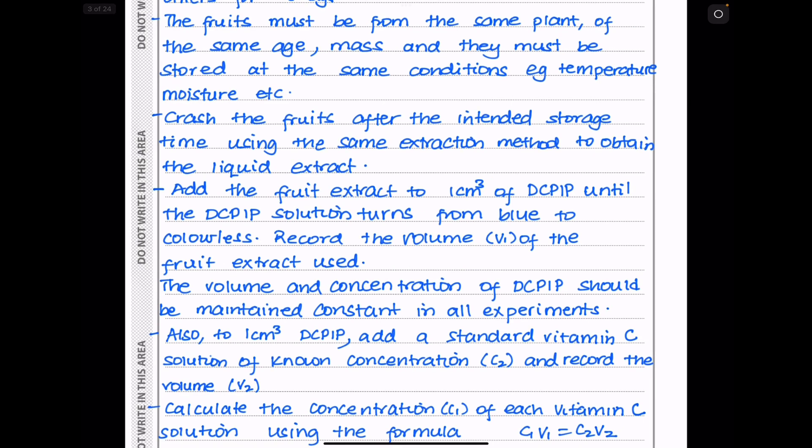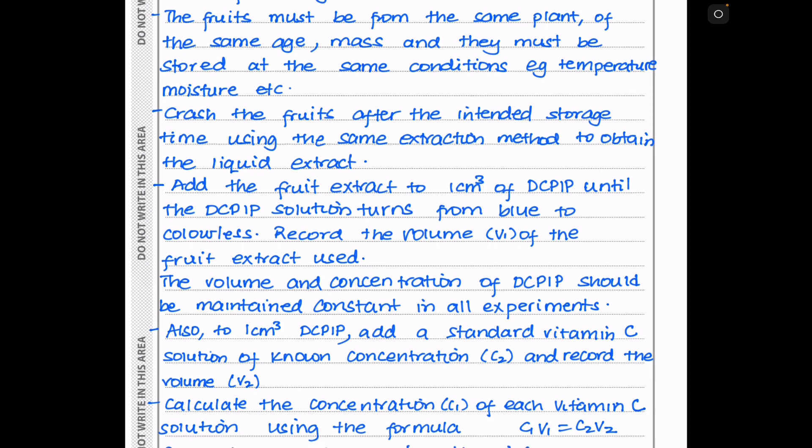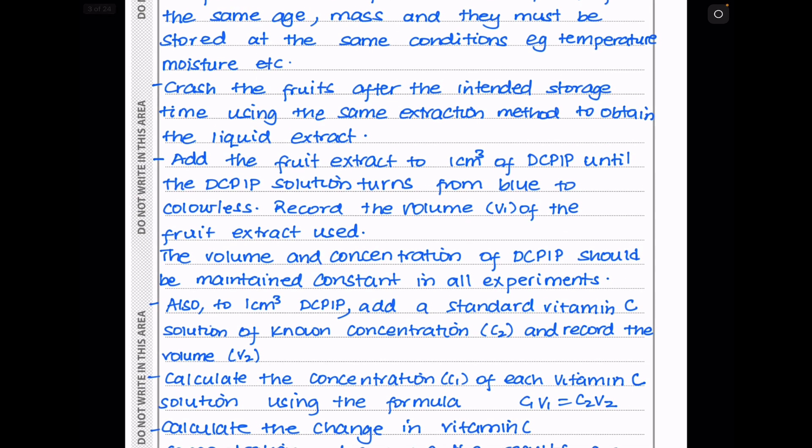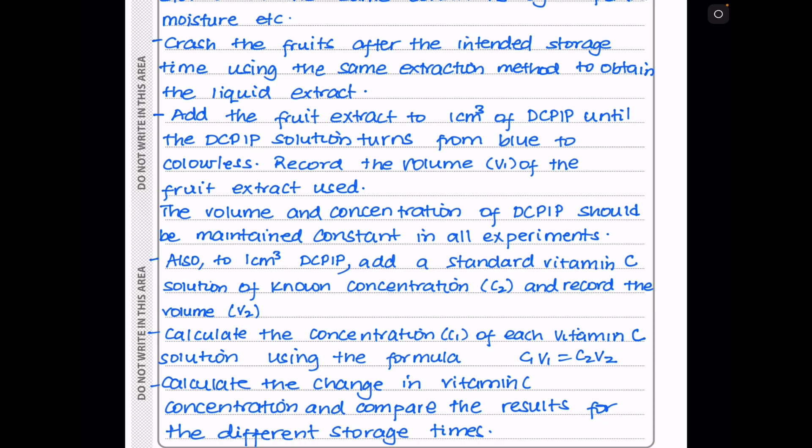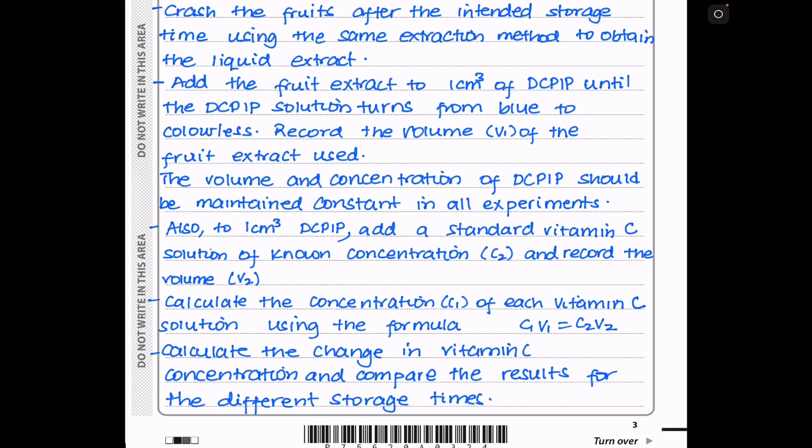Then add the fruit extract to 1cm cubed of DCPIP until the DCPIP solution turns from blue to colorless. You need to record the volume of the vitamin C solution that has been used to decolorize the DCPIP. In this case, this is V1, which is going to be the volume of the fruit extract. So the volume and concentration of DCPIP should be maintained constant in all experiments.